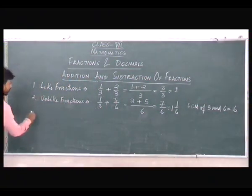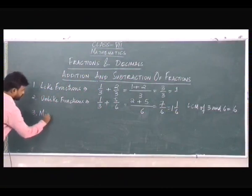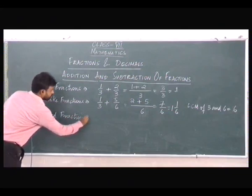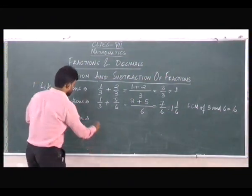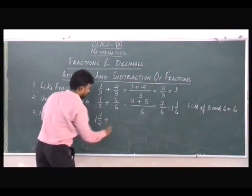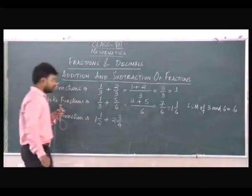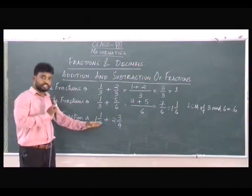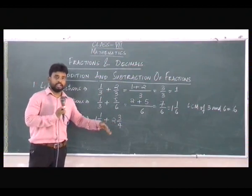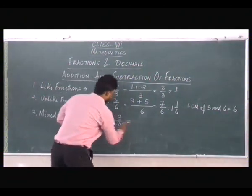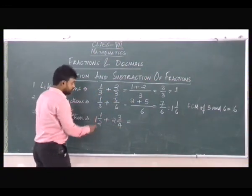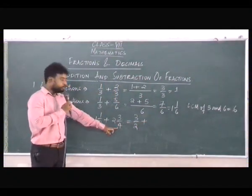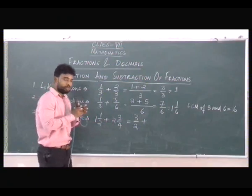Now suppose we have a mixed fraction. For example, suppose we have 1 and 1 by 2 plus 2 and 3 by 4. In this case what we'll do is first change the mixed fractions into improper fractions. We'll multiply 2 with 1: 2 ones are 2, plus 1 gives you 3 — so that becomes 3 by 2. Similarly, we'll multiply 4 with 2: 4 twos are 8, plus 3 gives you 11 — so that becomes 11 by 4.